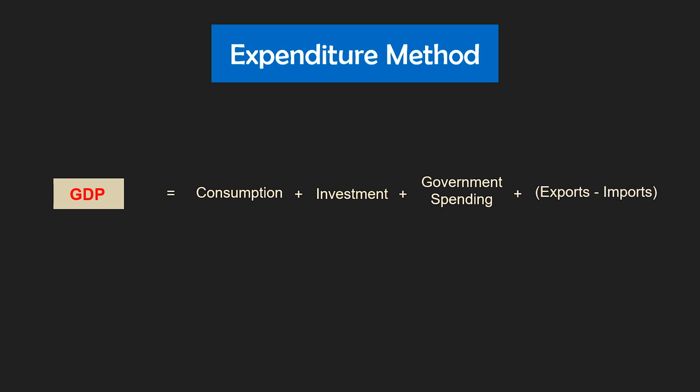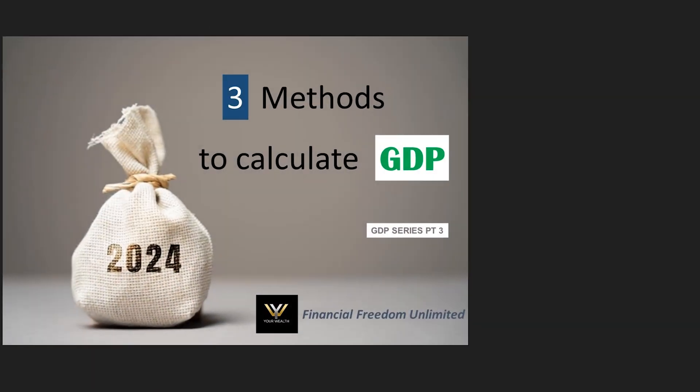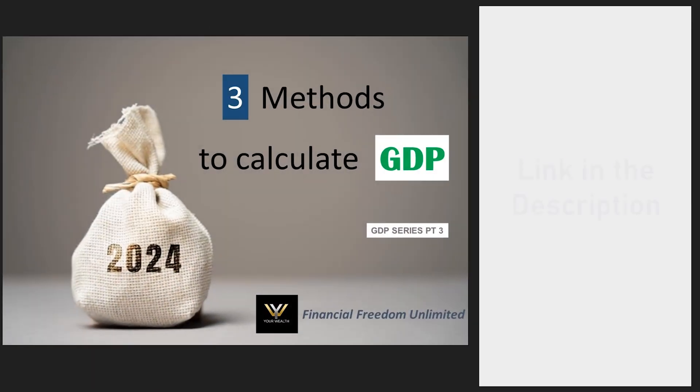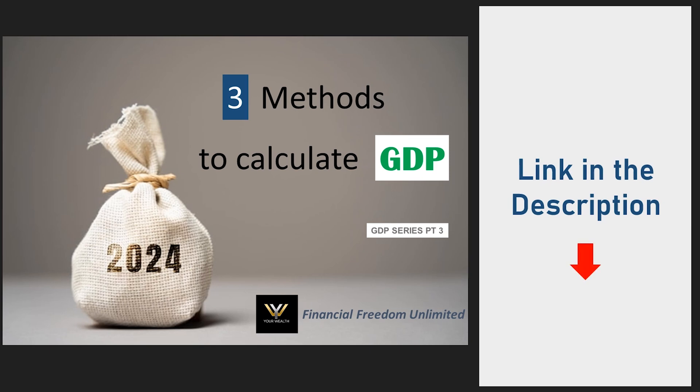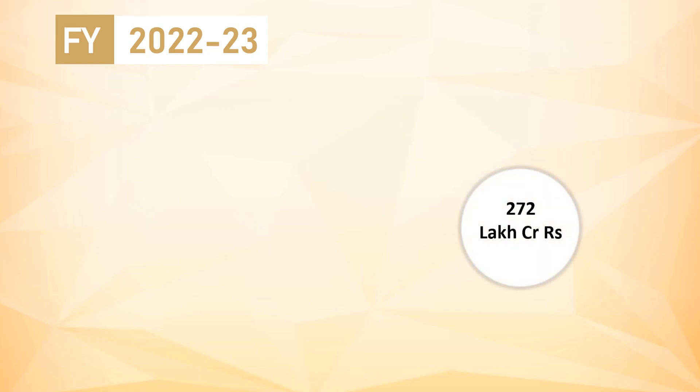To understand this method further and the details about each of these components, kindly watch our previous video on GDP calculation — the link is in the video description below. India's GDP as calculated for the financial year 2022-2023 is about 272 lakh crore rupees. Now that is one big number.